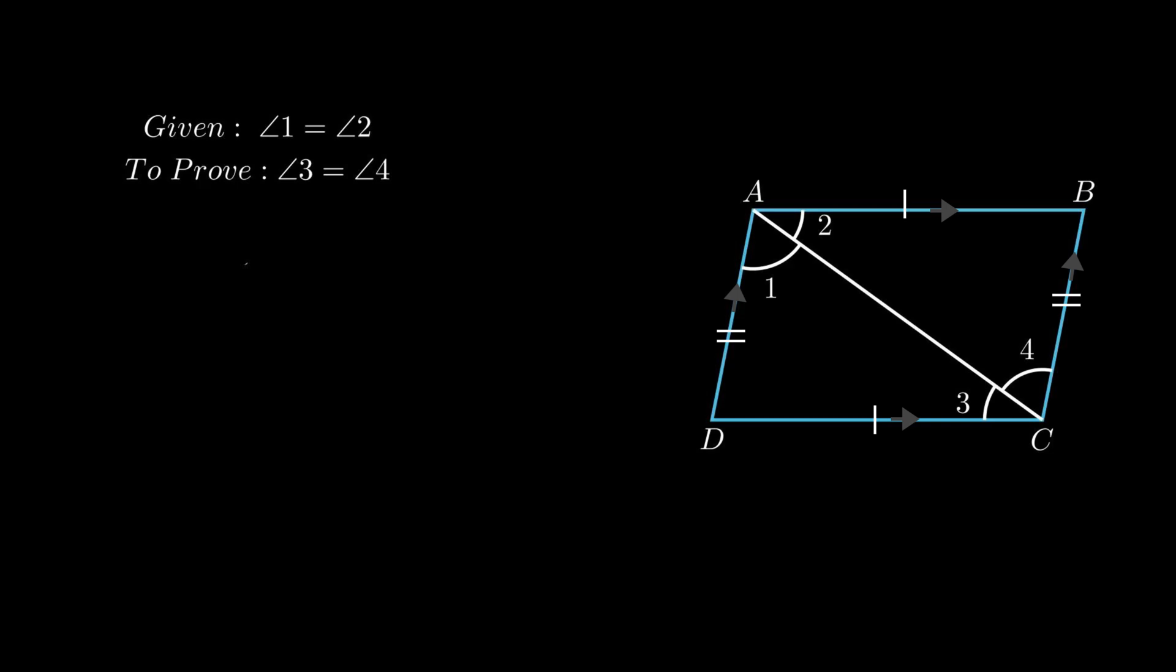As opposite angles of a parallelogram are equal, therefore angle A equals angle C and angle B equals angle D. Since side AB is parallel to side CD, therefore angle 2 equals angle 3 as interior alternate angles are equal.